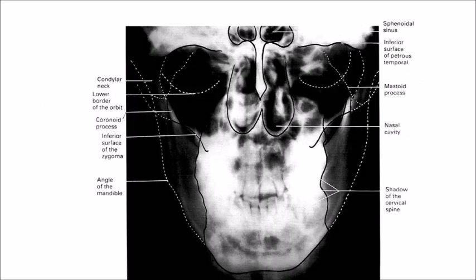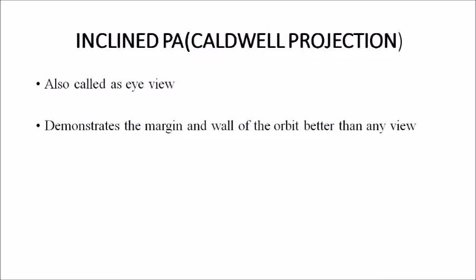Another modification is the inclined PA, also known as the Caldwell projection. It is used to determine the margin and wall of the orbit better than any other view, and is also called the 'eye view,' used exclusively for the orbit and orbital margins and walls. The next extraoral projection is the PNS view, also known as the Water's view or the occipital mental projection.